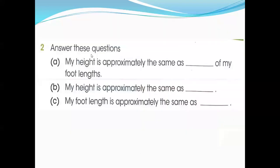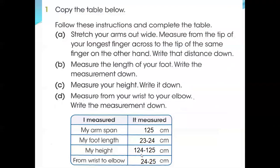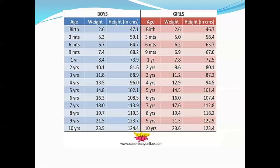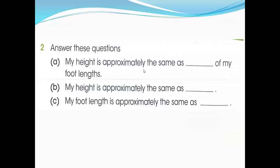So answer this question. My height is approximately the same as dash of my foot length. Foot length, how many foot lengths? If your foot length is 24, that means 24 or 25. 124 divided by 25 is 5. You need to write here 5. Five of my foot length. Some might be 6, some 5, approximately.